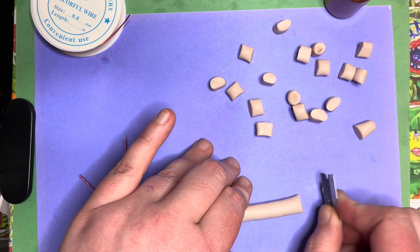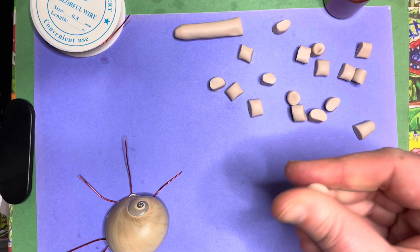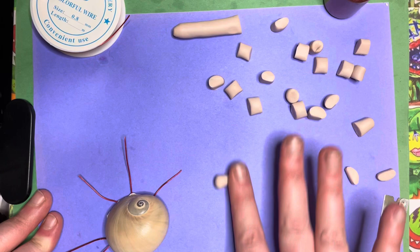So once you've got those 18 sections cut, take six of them, roll them in your fingers in a ball and then put them down and push pressure on one side and you'll get those claws. You need six of those.